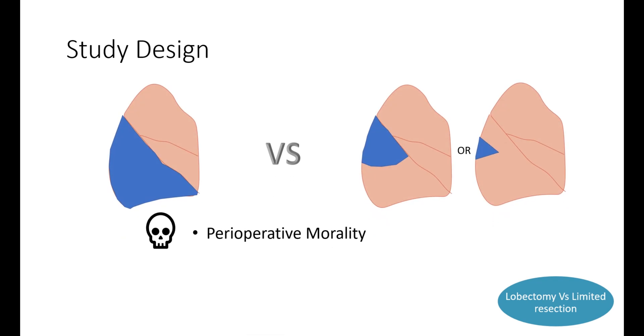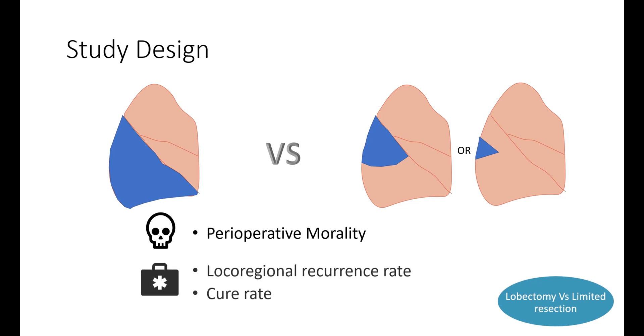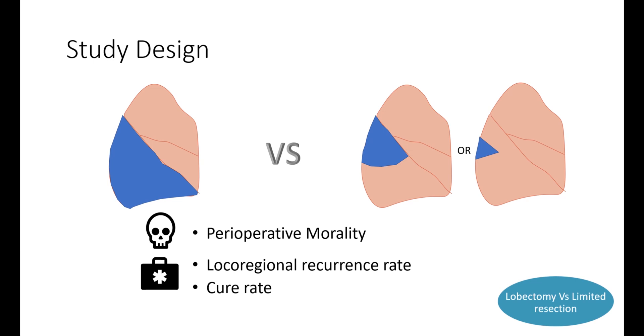Now let's get into the article. The study was a prospective controlled trial to determine the differences in perioperative mortality between lobectomy and limited resection in patients with T1N0 disease. Secondarily, they looked at local regional recurrence rates and cure rates, as well as postoperative pulmonary functions.